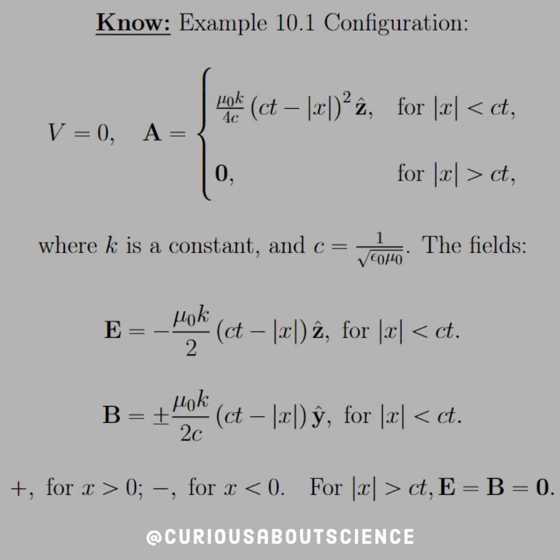And so then the fields are, well, if we take the negative time derivative of this potential, we get an extra factor of C, and that cancels out with what we see here. Instead of mu naught K over 4C, we just get 2C from the power rule and chain rule, and that cancels down.